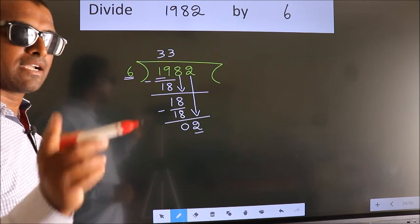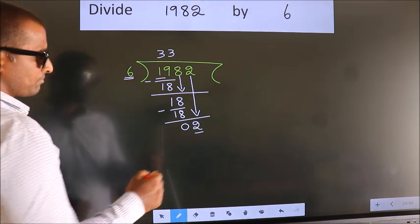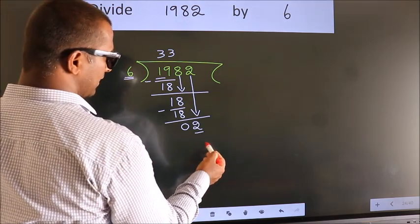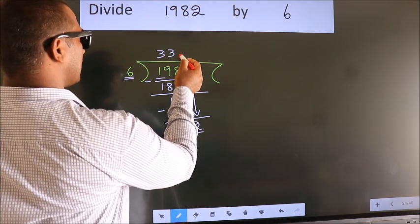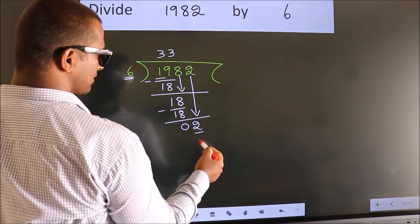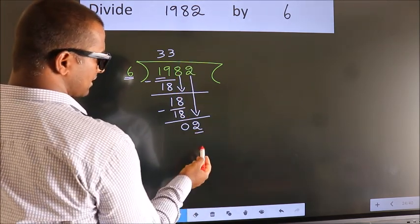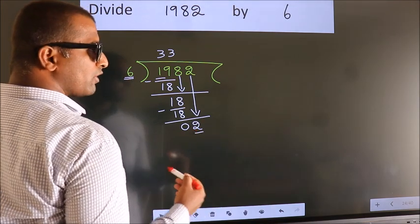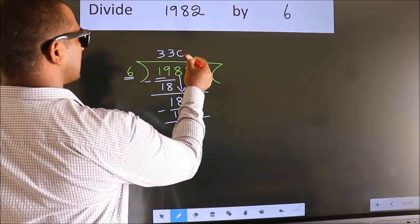Instead of that, what we should think of doing is, which number should we take here? If I write 1, we get 6. But 6 is larger than 2. So what we do is, we take 0 here.